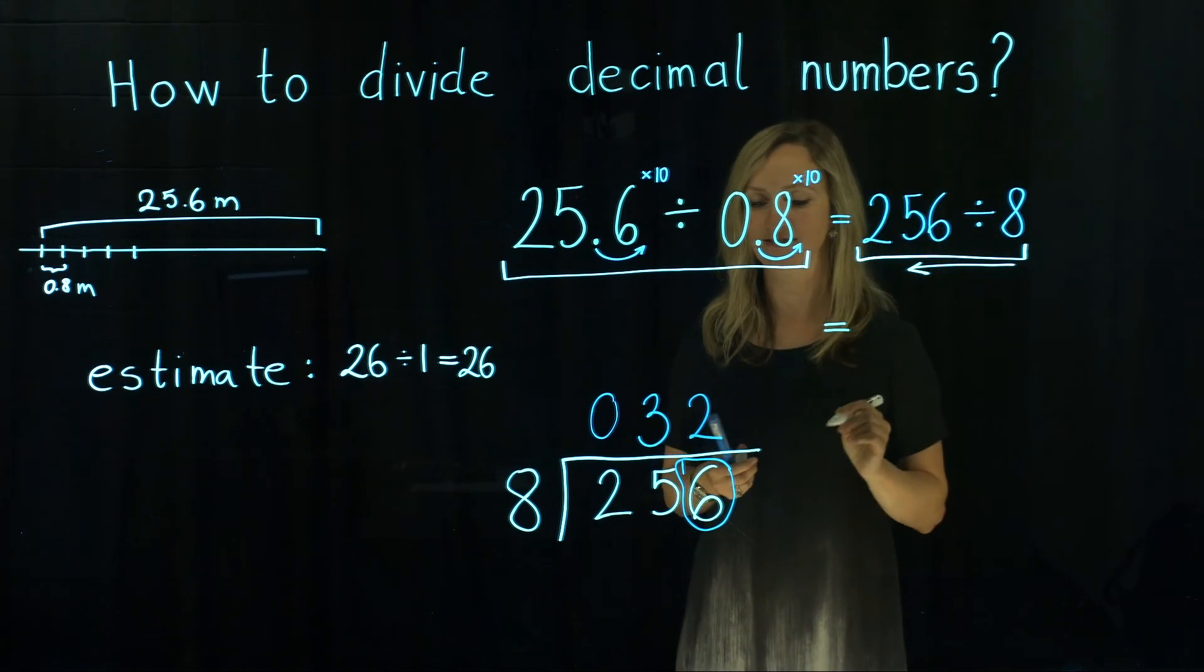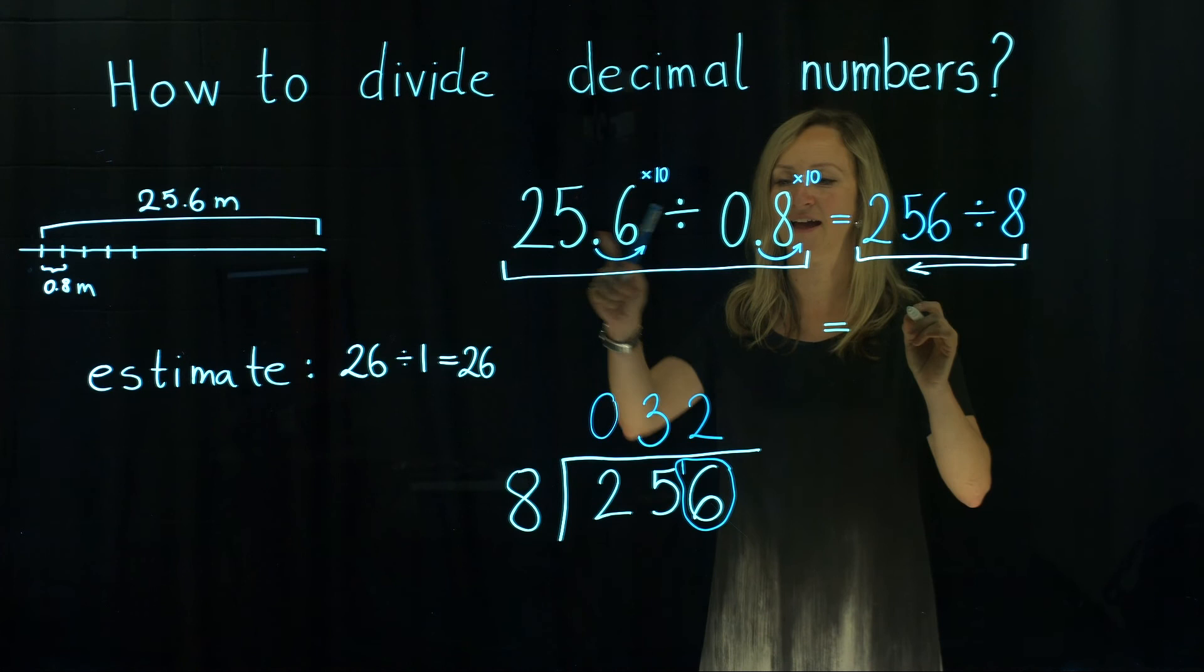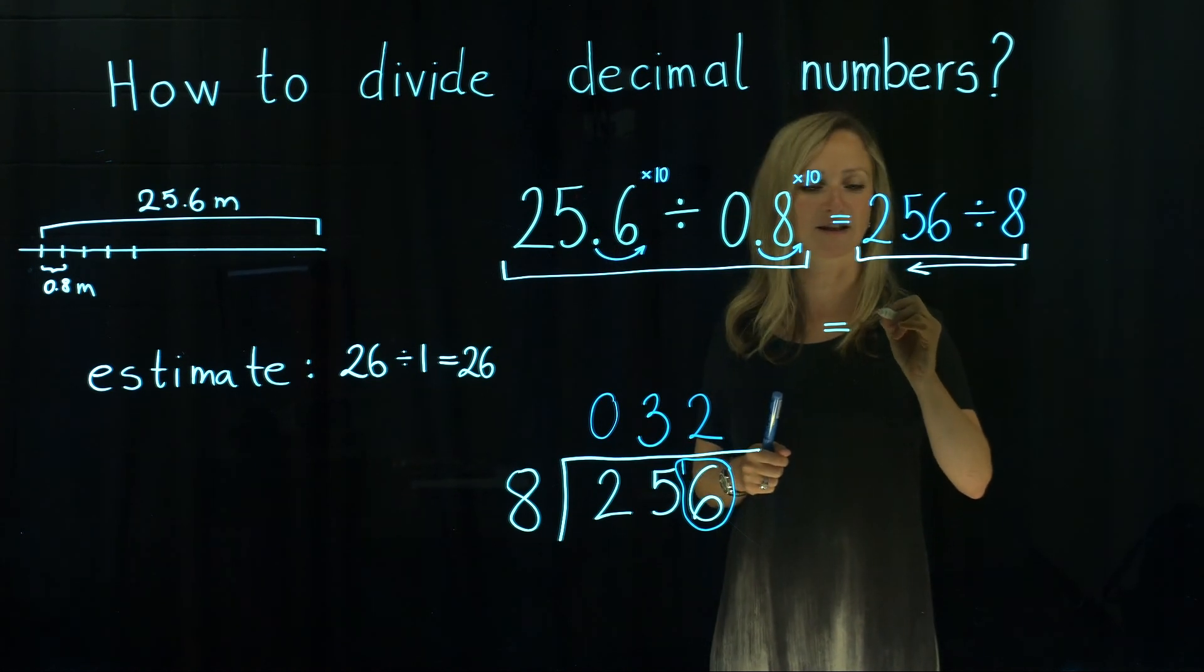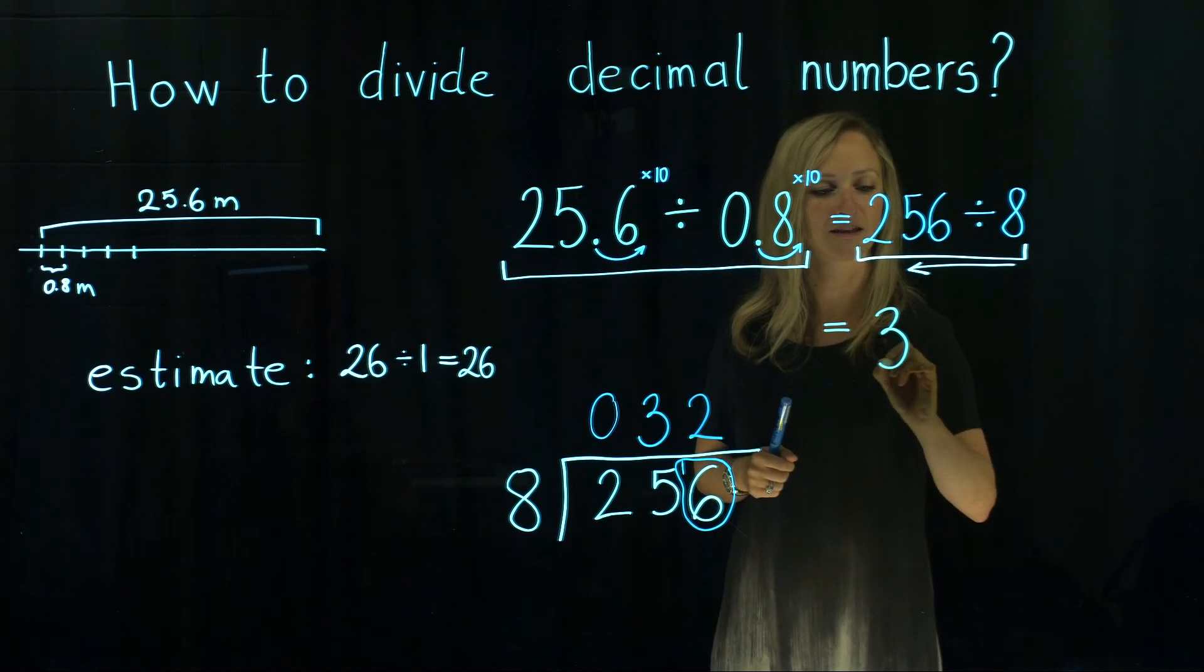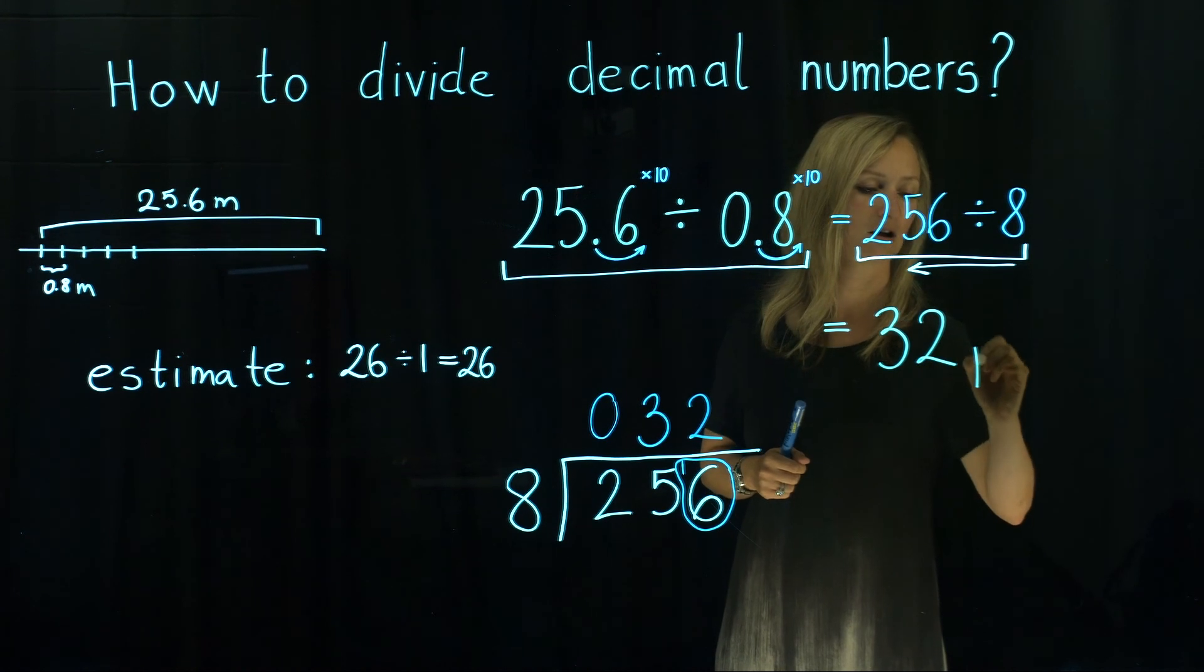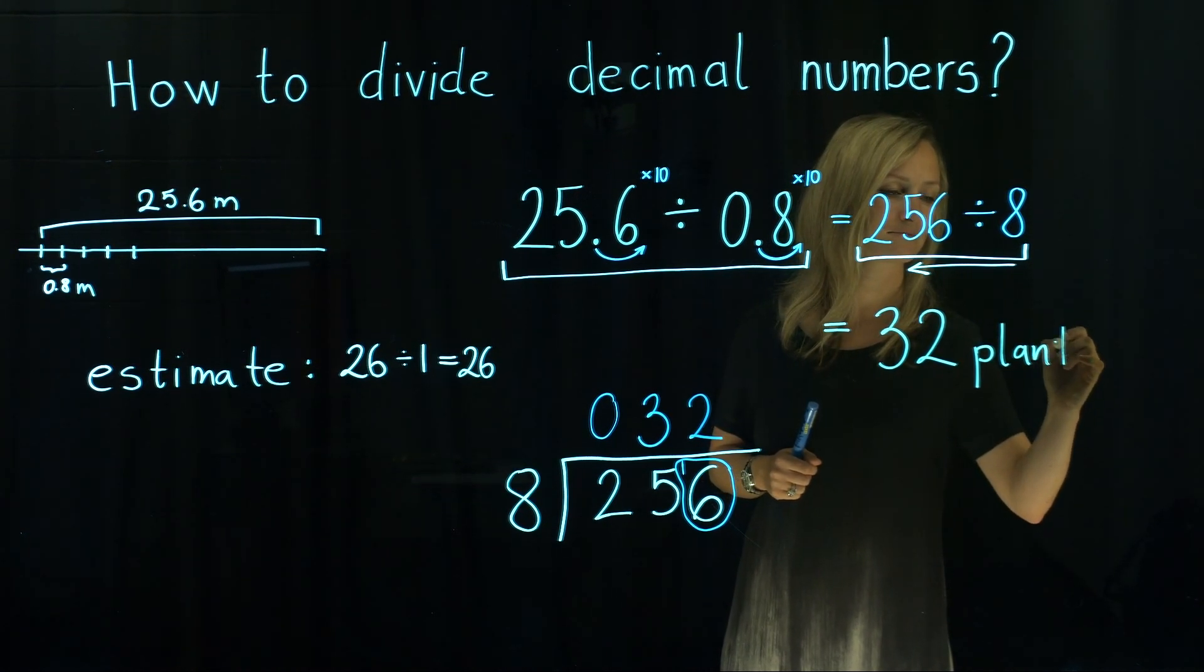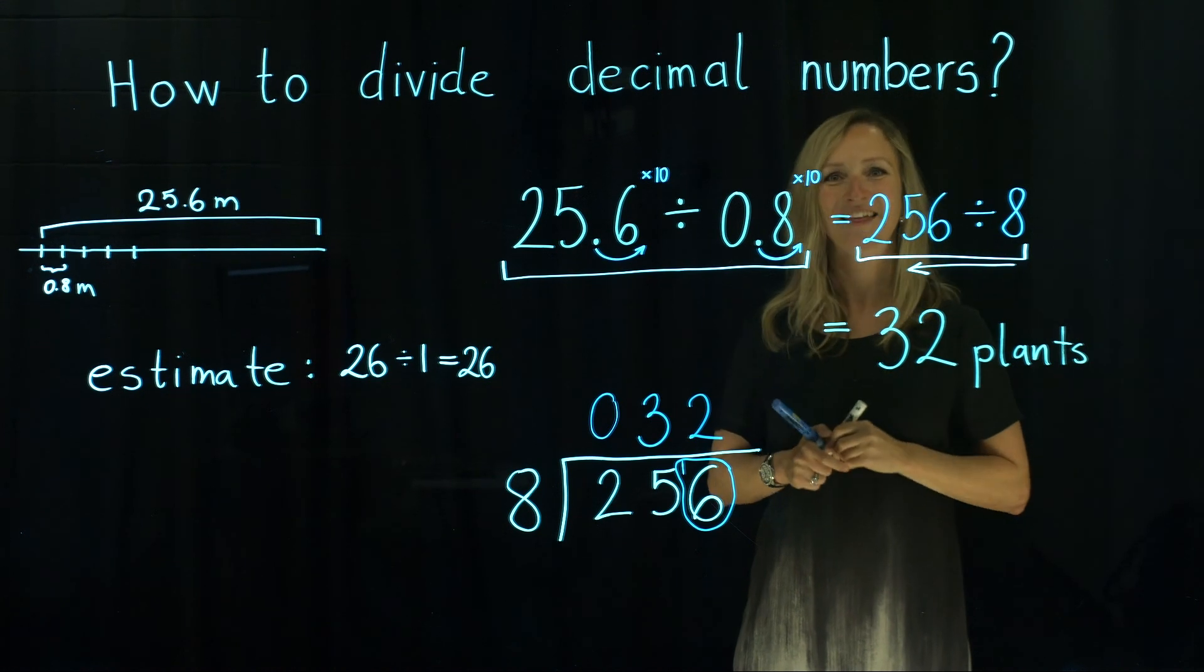How many plants do we need for that long 25.6 meter hedge? We need 32 plants. Thank you for watching!